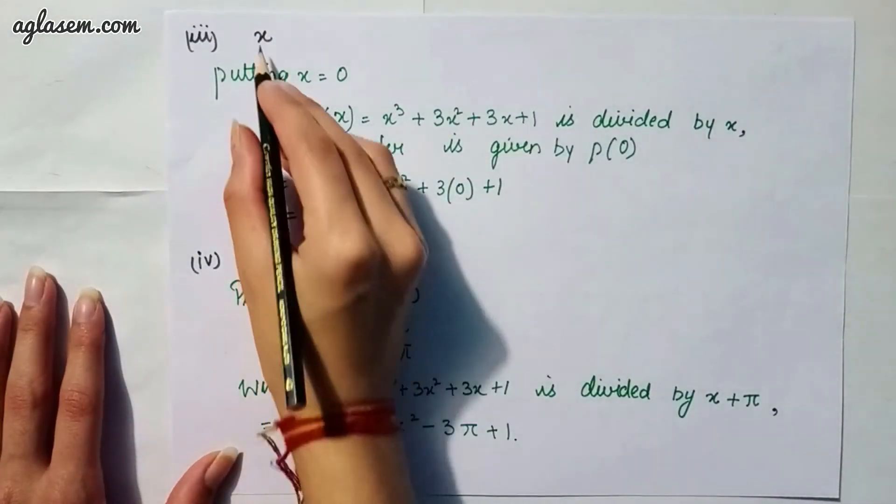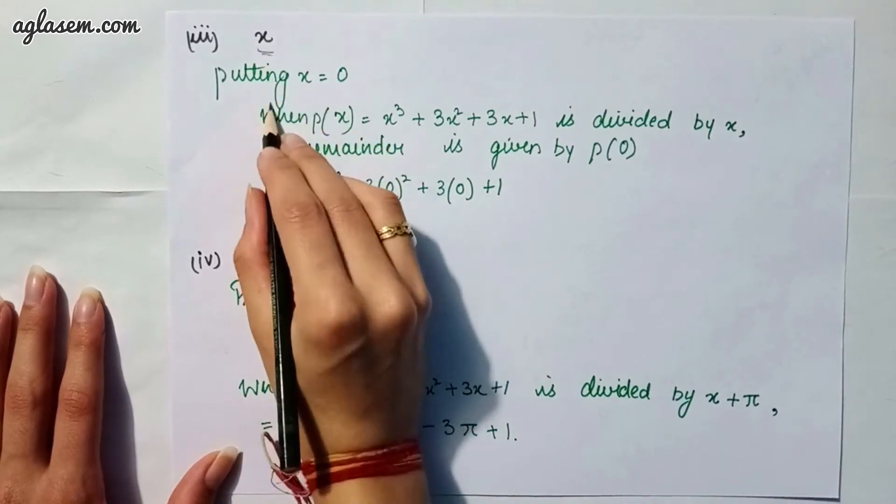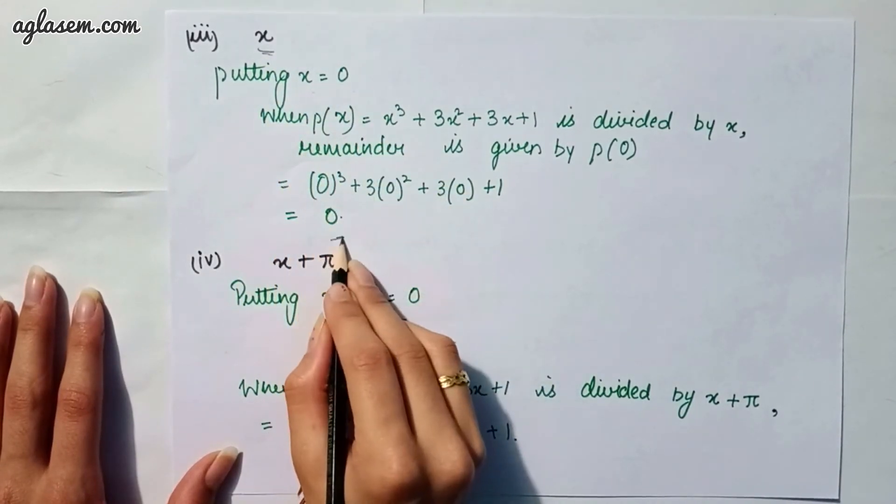Moving to our third part which says, x. So, putting x = 0, we will get the answer 0.